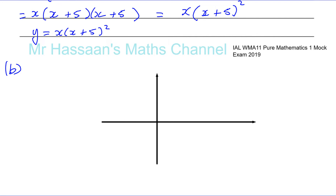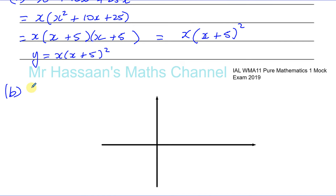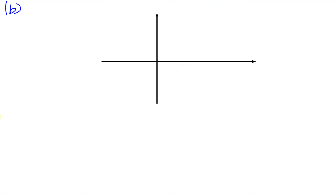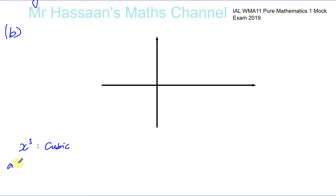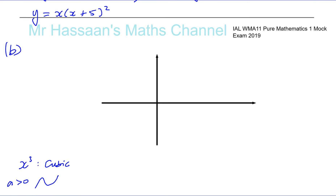Now, what do we know about this? We know it's cubic - the highest power is x cubed. We know the coefficient of x cubed is positive; you can see it's one x cubed, so a is greater than zero. Therefore it rises and rises. If a were less than zero, a negative x cubed term, it would fall and fall. So we know it's going to have that type of shape.